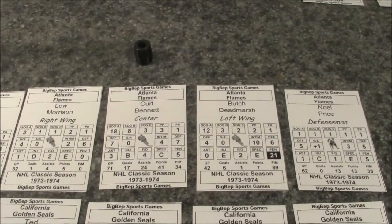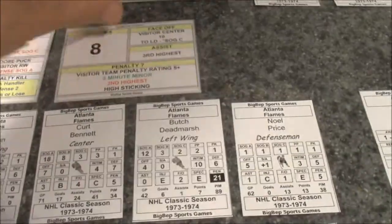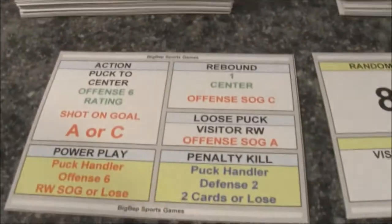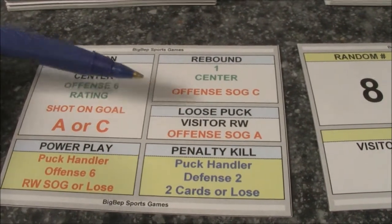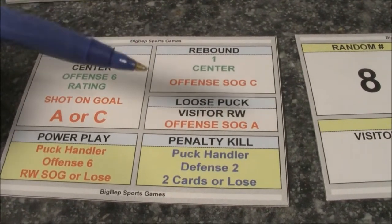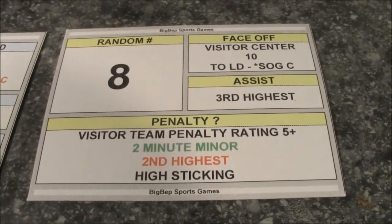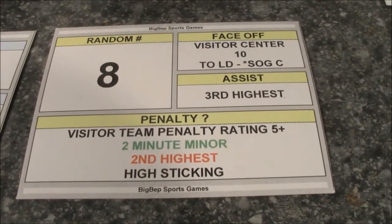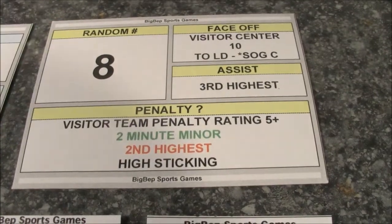The way I mark off a time sequence now is only if I'm reading an action result. Only when I'm reading an action result off the fast action deck do I mark off a time sequence. If I'm reading a rebound or a loose puck, no time sequence is marked off. The power play and the penalty kill are separate actions. On the fast result card, there's never anything where I mark off a time sequence — the face-off, assist, 1 to 100 random number, and a possible penalty.